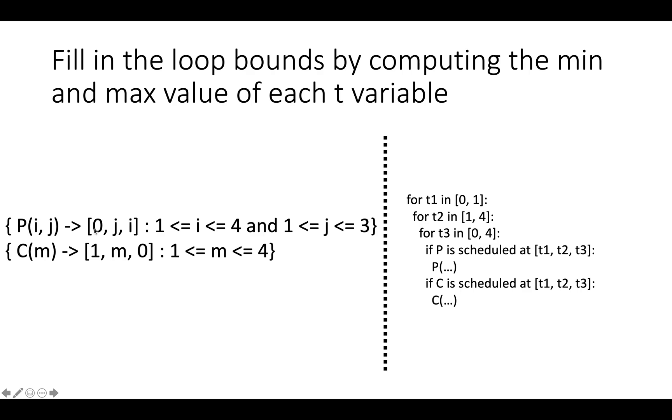By minimum and maximum, I mean the minimum and maximum value at which some instance of a statement is scheduled. So P(i) is scheduled at time one, C is scheduled at time one. And so the min of t1 is zero, the max will be one.